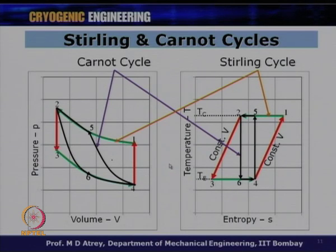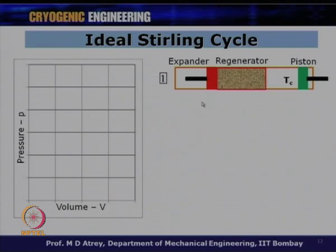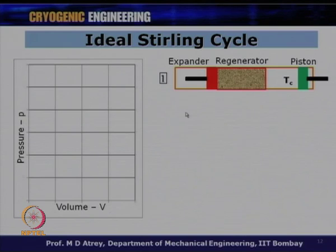To realize the ideal Stirling cycle in practice, consider a compression piston on one side and an expander piston/displacer on the other, connected through a regenerative heat exchanger (regenerator). The regenerator stores heat during heat rejection and returns it during heat absorption as gas flows back and forth. Plotting on a PV chart: initially the compressor piston is at bottom dead center and the expander is at top dead center.